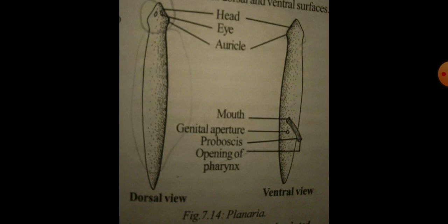The head bears a pair of eyes on the dorsal side. The ventral surface includes a mouth opening situated in the middle of the ventral surface. The pharynx protrudes through the mouth and is called the proboscis, which has an opening for the pharynx. Behind the mouth there is another small opening called the genital aperture.